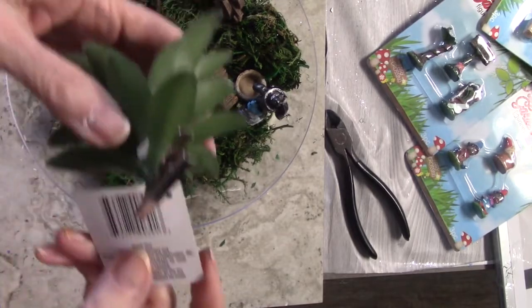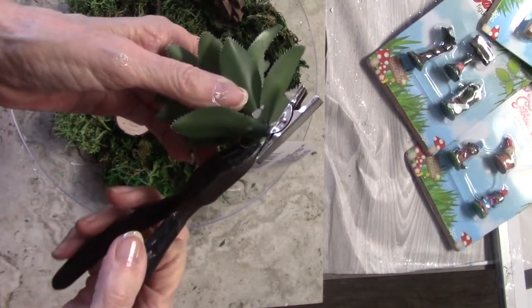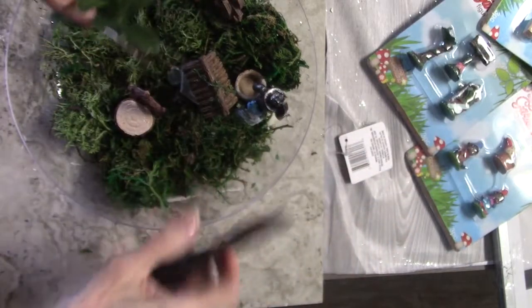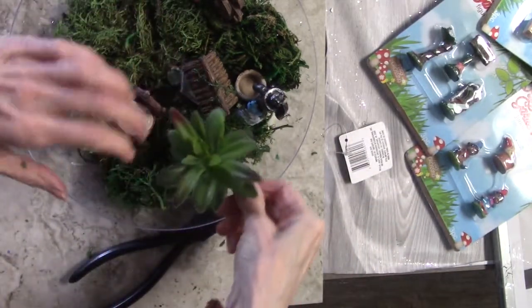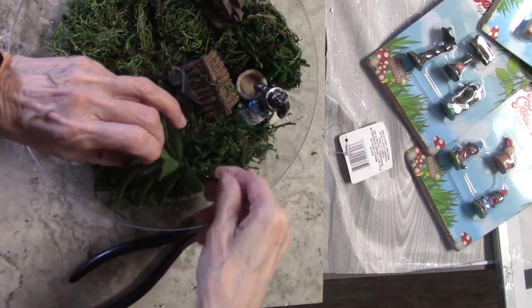And I got the little succulents from Dollar Tree. Just going to take the tag off. That little clip comes out too so you can pull the clip out if you want to. I left it in there just to clip it to some of the greenery or the moss.